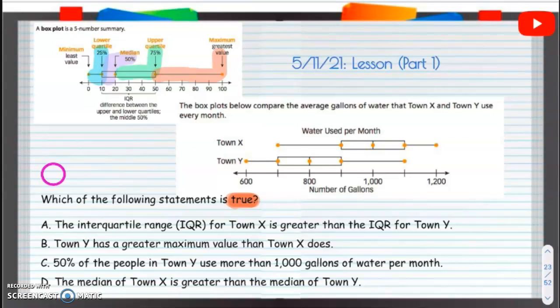The interquartile range, IQR, for town X is greater than the IQR for town Y. Well, let's take a look. Town X, the IQR, if we have 1,100 minus 900, it'll be 200. So town X is 200.